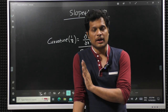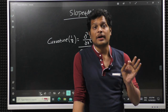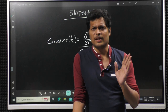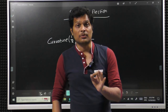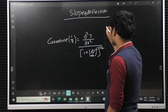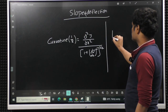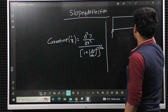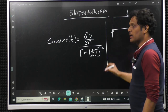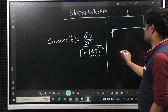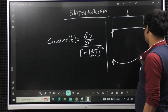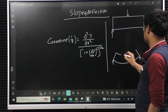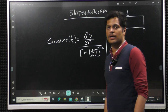We are not calculating for the entire beam as a whole, but for every cross section we will calculate slope and deflection. Suppose if I have a beam and I apply a load, obviously it will bend.